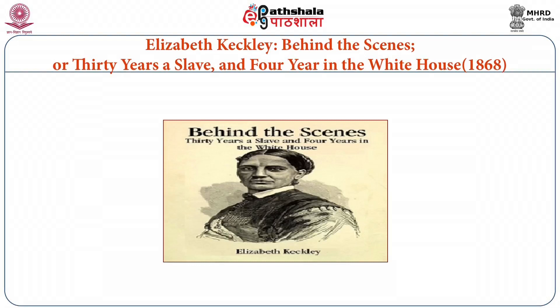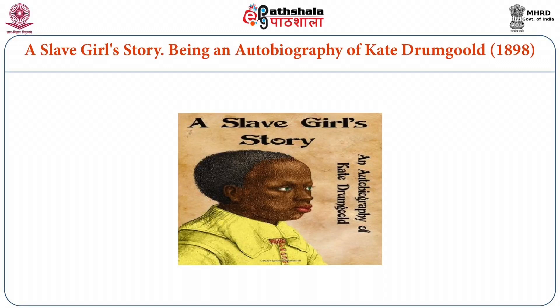Elizabeth Keckley's Behind the Scenes, or Thirty Years a Slave and Four Years in the White House was published in 1868 — three years after the Civil War ended. The title suggests she experienced 30 years of slavery but also four years in the White House, indicating a milder form of servitude even after legal emancipation. A Slave Girl's Story, being an autobiography of Kate Drumgold, was published in 1898 — towards the end of the century, slave narratives were still being written by former slaves.